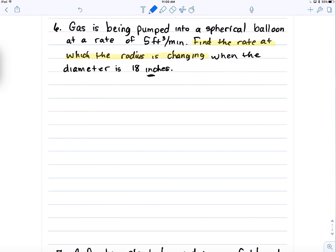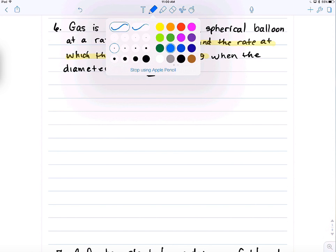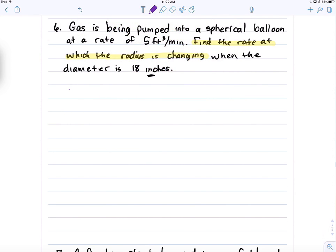Gas is being pumped into a spherical balloon at a rate of 5 feet cubed per minute. Find the rate at which the radius is changing when the diameter is 18 inches. So, first of all, a spherical balloon, when we're talking about the inside of that, what are we talking about? Volume, right? So, let me go ahead and give you the formula for that. So, volume of a sphere, it's going to be 4 thirds π r cubed.